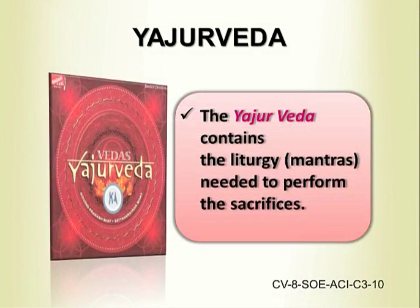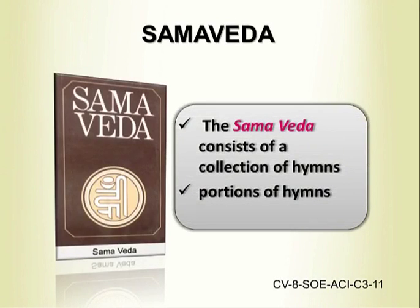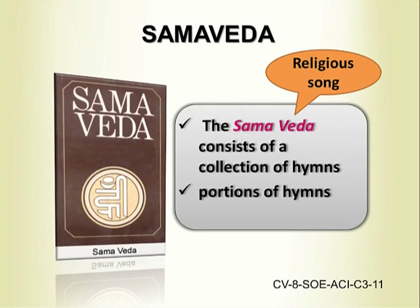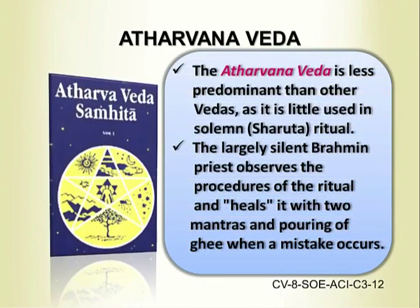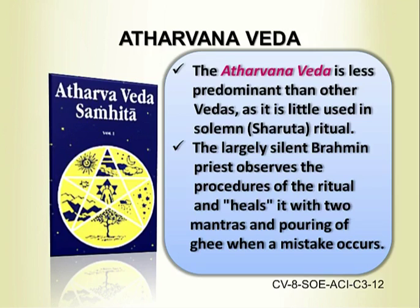Yajurveda: The Yajurveda contains the liturgy and mantras needed to perform the sacrifices. Samaveda: It consists of a collection of hymns, meaning religious songs sung in praise of God. Atharvana Veda: The Atharvana Veda is less predominant than the other Vedas, as it is little used in solemn — that is, Shrauta — rituals. The lordly silent Brahmin priest observes the procedures of the ritual and corrects it with mantras and pouring of ghee when a mistake occurs.